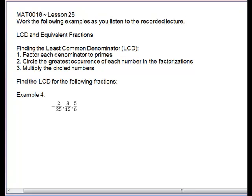For our last example, we'll look at denominators 25, 15, and 6. So our first step is break those to primes. 25 will give us 5 times 5. 15 will give us 3 times 5. And 6 will give us 2 times 3.